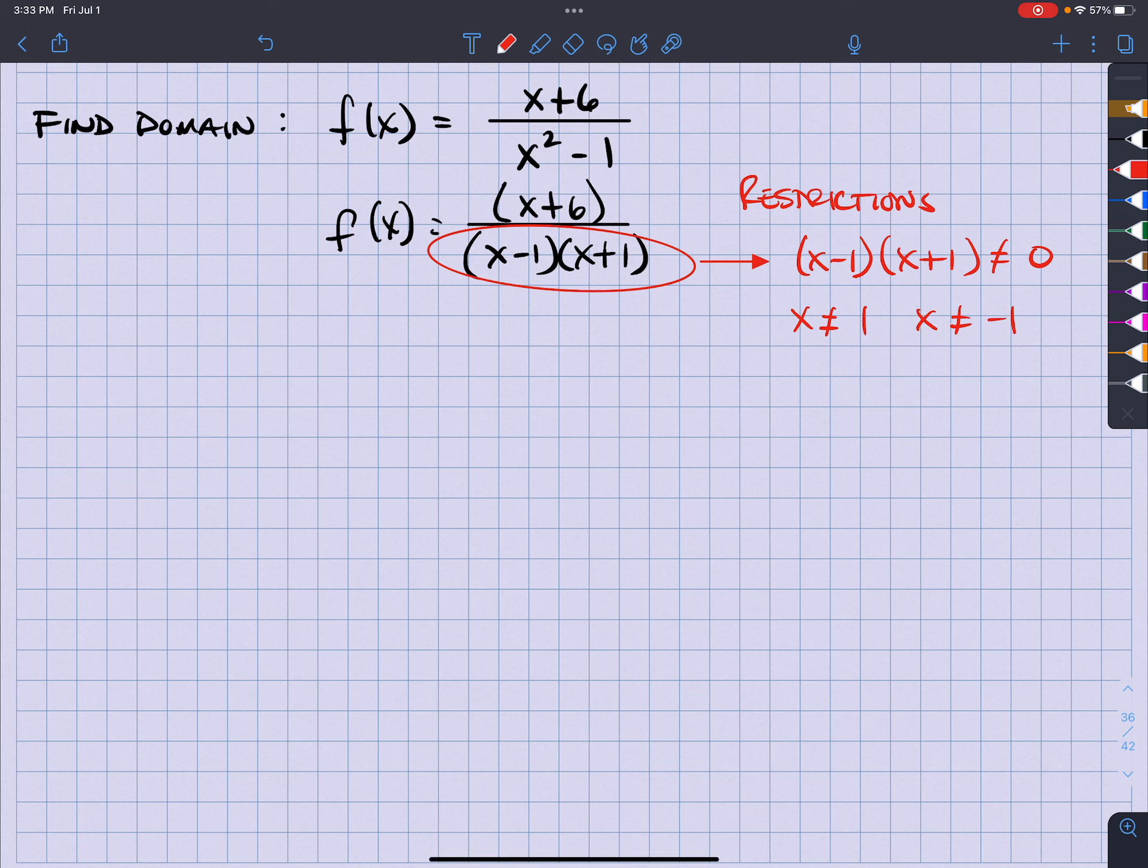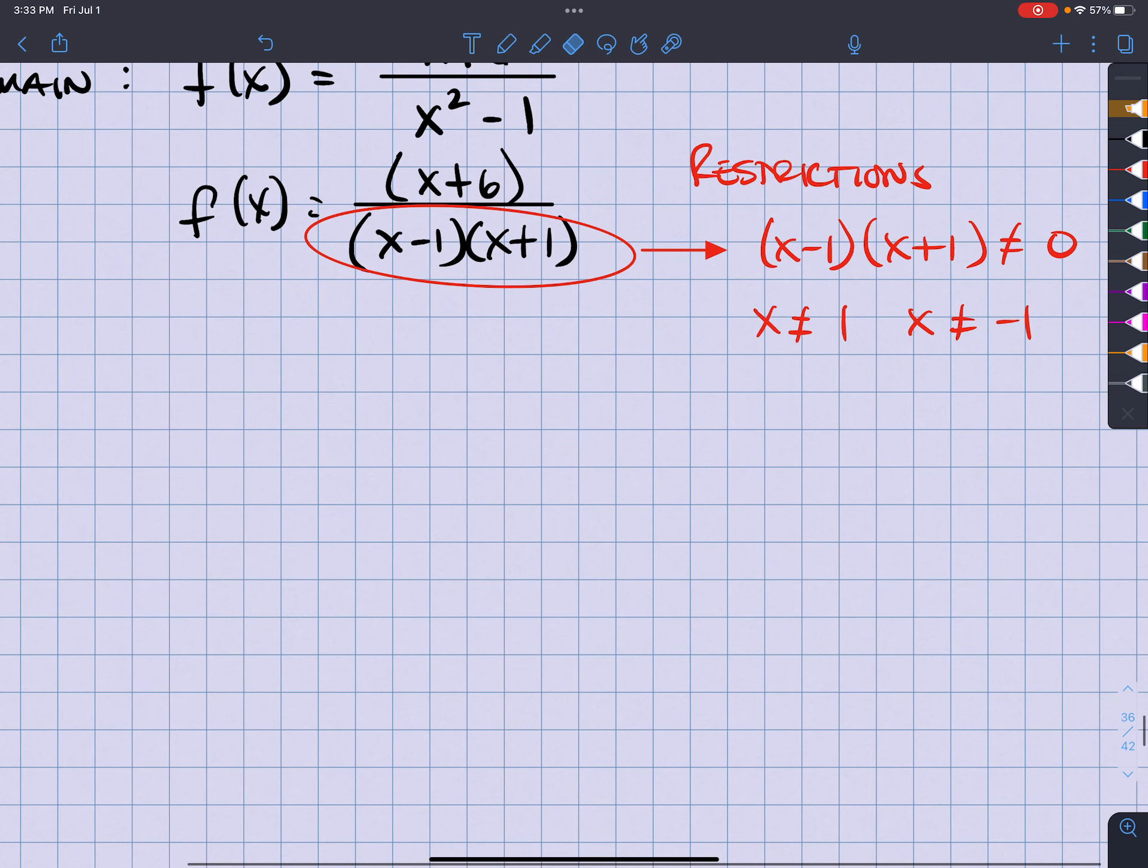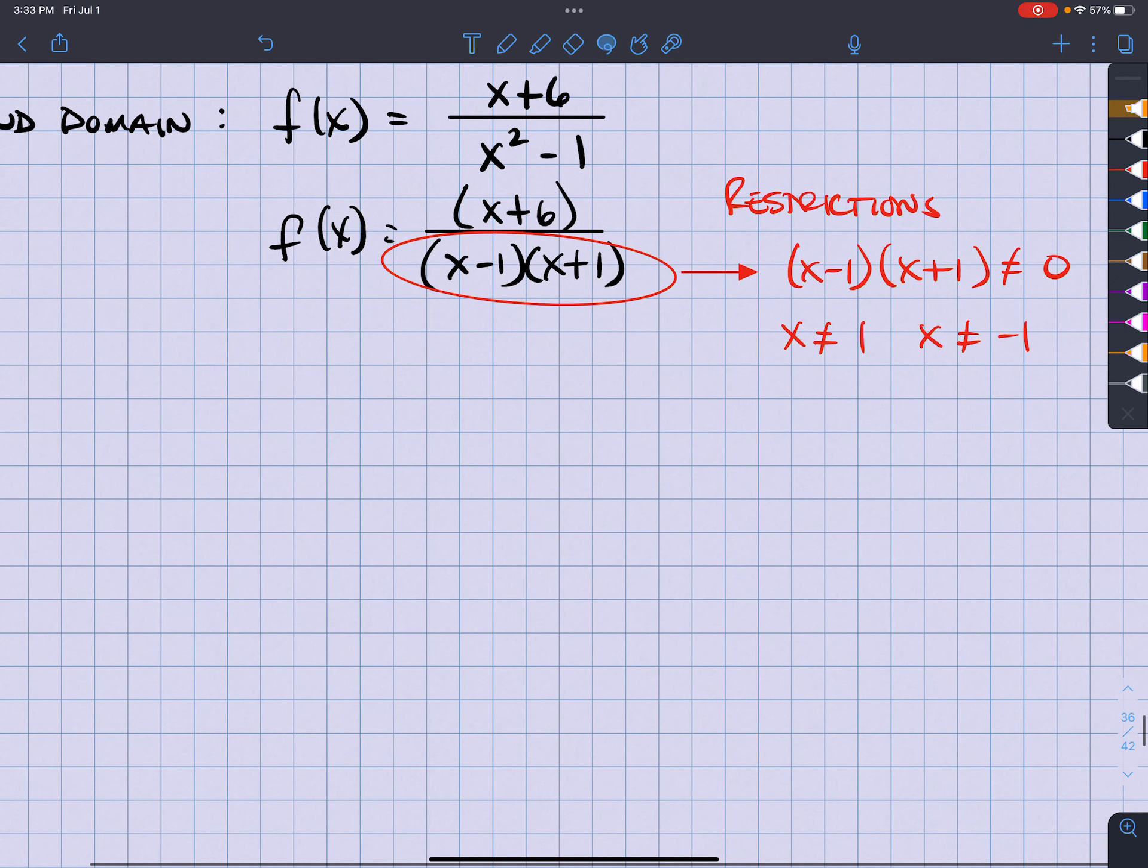So those are my restrictions, meaning I can use anything else except for that. If you guys look at it, let me write this a little better. So what this is telling me is that I can use anything but these two. And that is absolutely the truth. And that is going to be choice D.